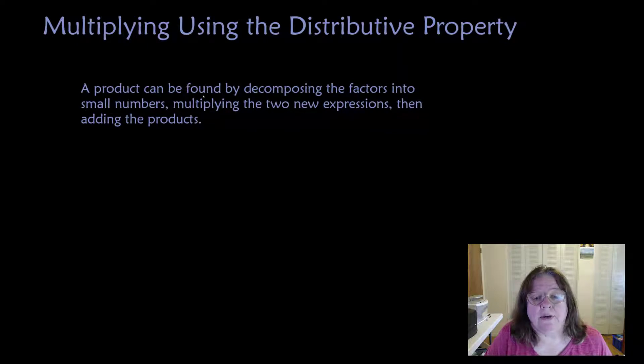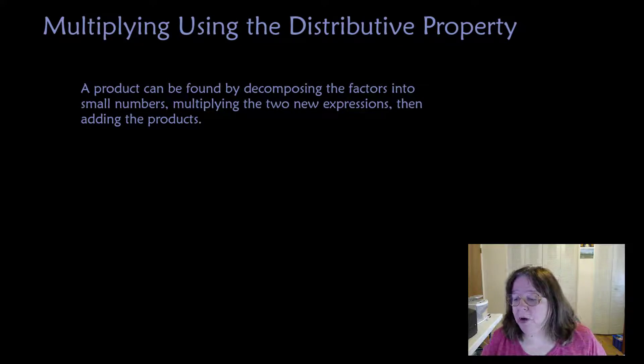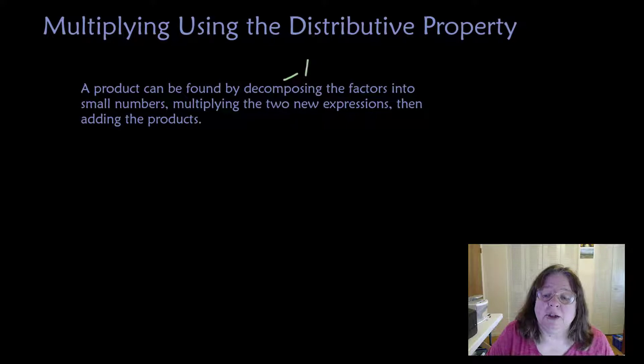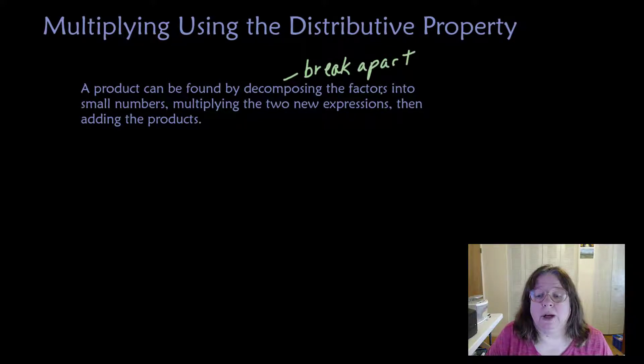A product can be found by decomposing the factors into small numbers, multiplying the two new expressions, then adding the products. That sounds a little bit more complicated than what it is. Decomposing simply means to break apart. So we can break apart larger numbers, factors, into smaller numbers.